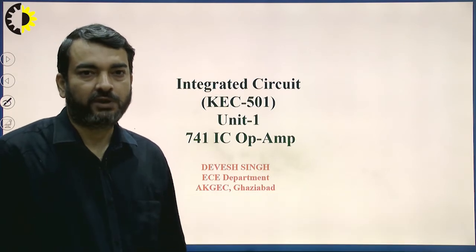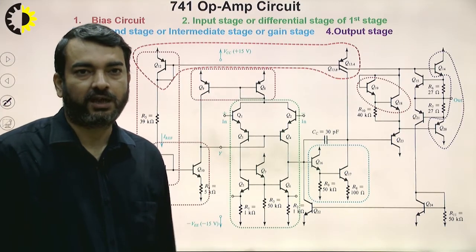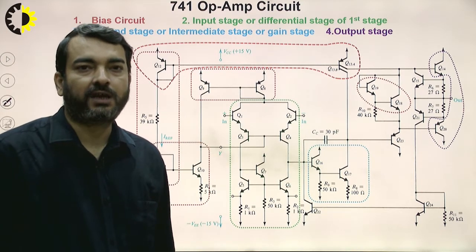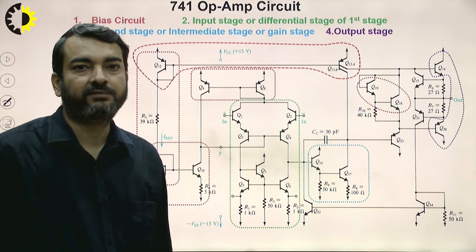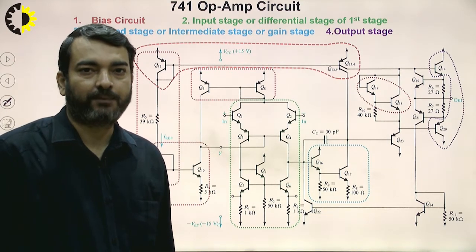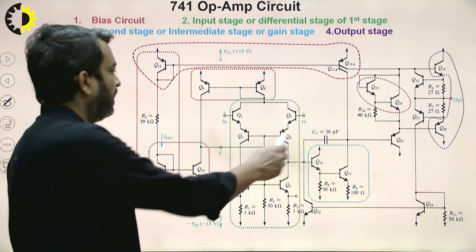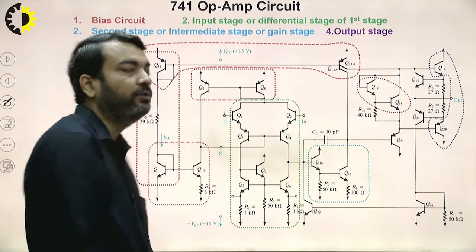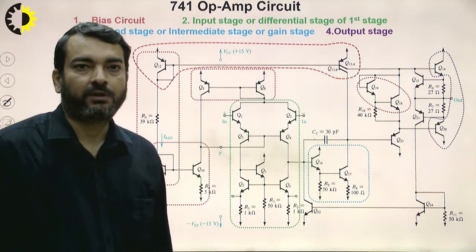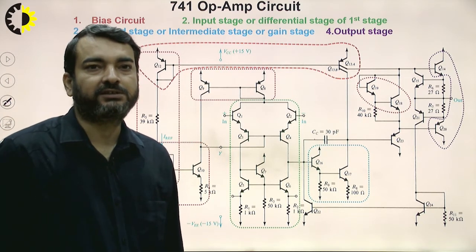If we look at the schematic of IC 741, it consists of 23 BJTs, one capacitor, and a few resistors. It consists of different stages.